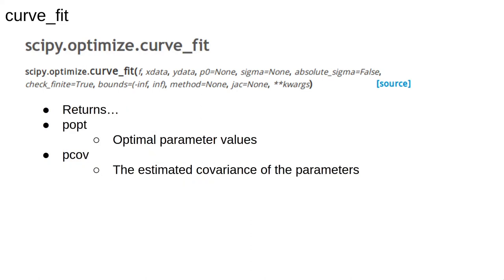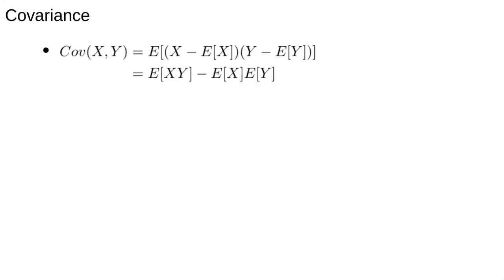Curve_fit returns two arrays. Popt are the optimized values of the parameters, and Pcov is the estimated covariance matrix of the parameters. We mentioned covariance briefly in a previous lecture. It is a way to compare how deviations in one variable x relate to deviations in another y.